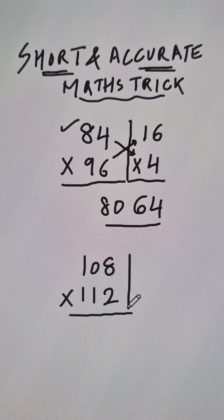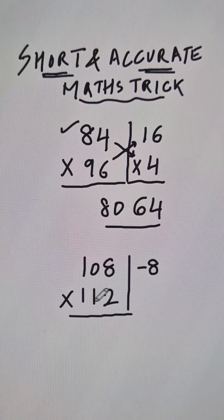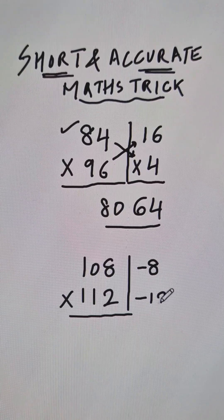Likewise, if you see these two numbers, 100 minus 108 is negative 8, and 112 when subtracted from 100 gives you negative 12.